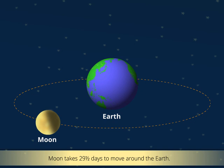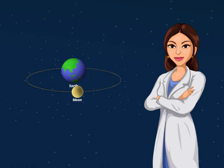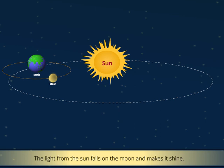Do you know that the moon does not have its own light? Then how does it shine in the sky? It is the light from the sun that falls on the moon and makes it shine.